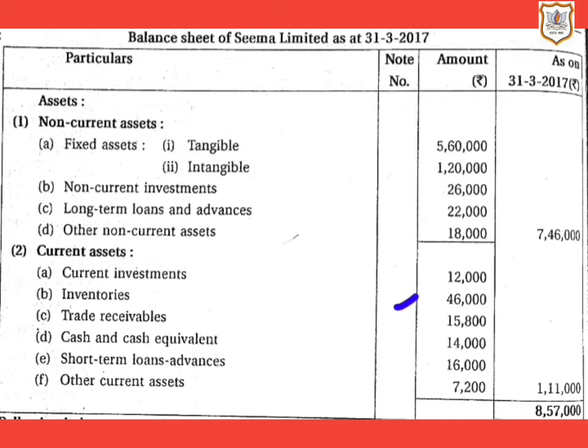Trade receivables of 15,800 will be shown under current assets. Trade receivables means amounts receivable for sale of goods or services rendered by the company in the ordinary course of business. They are classified as current assets if they are receivable within 12 months from the date of the balance sheet or within the operating cycle of the business. Trade receivables includes both debtors and bills receivable.